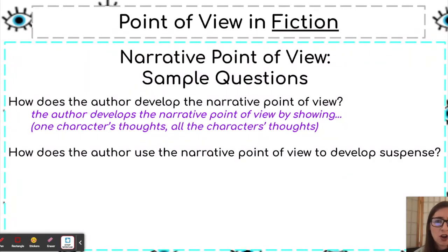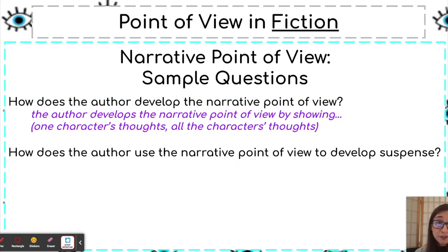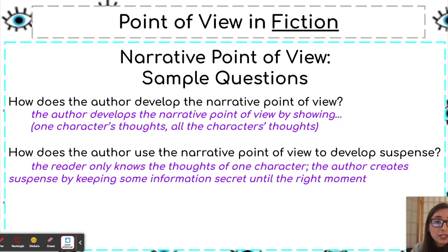Another question is: 'How does the author use the narrative point of view to develop suspense?' Suspense means the reader might be curious or dying to know what's going to happen next — it's when the writer does not reveal everything all at once. In the first person point of view, you only know things from one person's perspective, so the author can use this to develop suspense because the reader only knows the thoughts of one character, keeping information secret just until the right moment.